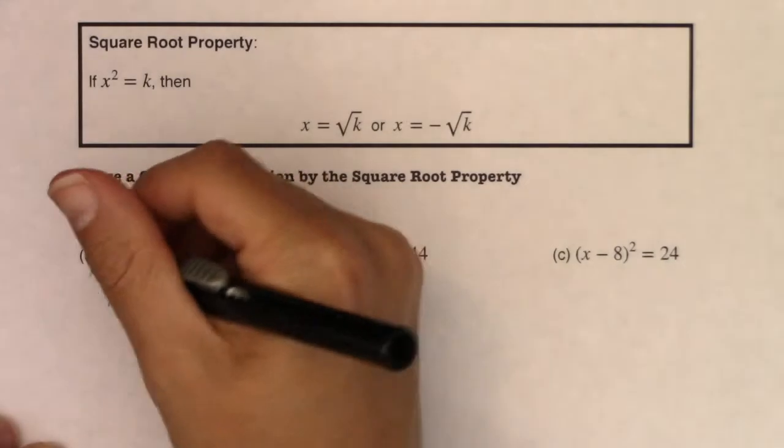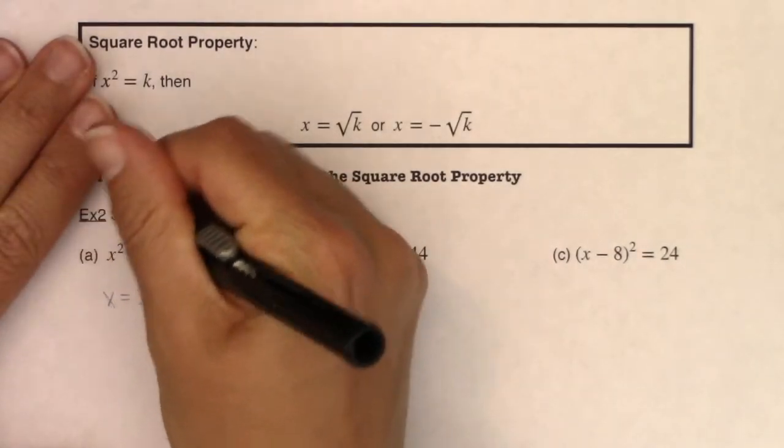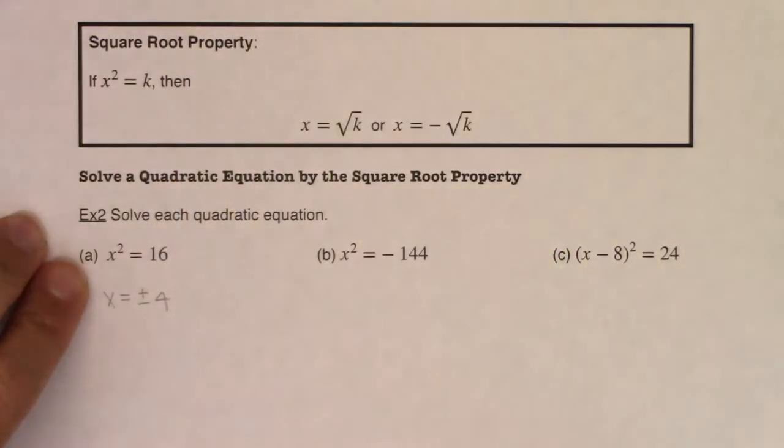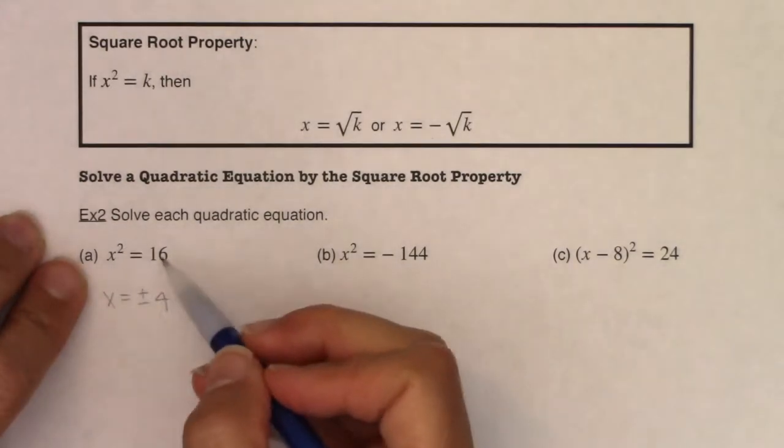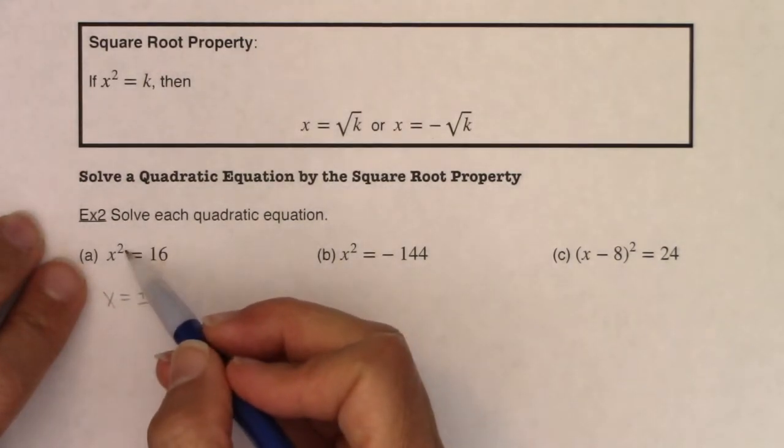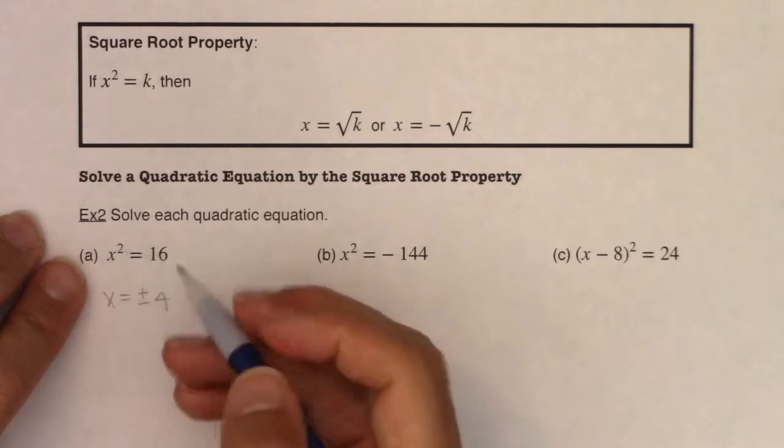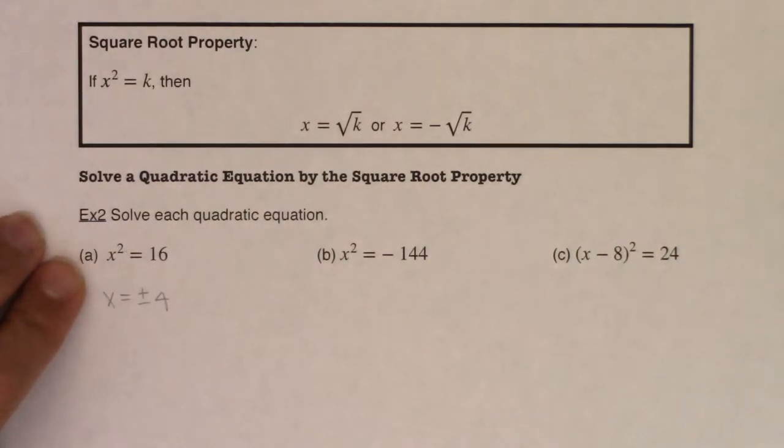And if I erase these square root symbols and we think back to our original problem, there are two numbers that when I square them, square to 16. Positive 4 squares to 16 and negative 4 also squares to 16.